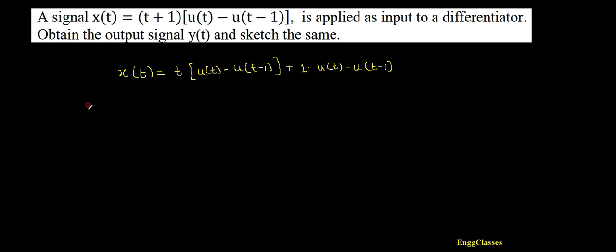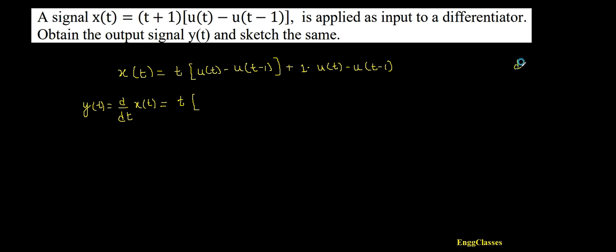Now I need to find the output signal y(t). y(t) is going to be the differentiation of x(t), that is d/dt of x(t). Since we have a product of two functions, I will first keep t as it is and differentiate [u(t) - u(t - 1)].